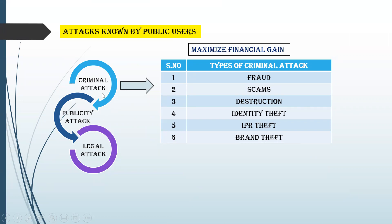Coming to criminal attack — the attacker will be focusing only on how he or she can maximize the financial gain by attacking something. There are different criminal attacks happening across the network: fraud, scam, destruction, identity theft, IPR theft, and brand theft. Fraud is nothing but modifying or altering data when one user is communicating to another user.